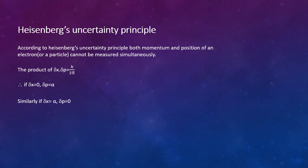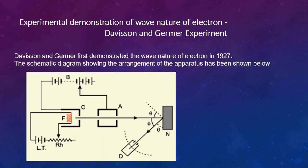Next, we will see Heisenberg's uncertainty principle. According to Heisenberg's uncertainty principle, both momentum and position of an electron or a particle cannot be measured simultaneously. There will be some uncertainty in position Δx and uncertainty in momentum Δp. The product Δx × Δp is approximately equal to ℏ, that is h/2π. According to this equation, the right-hand side is a constant. So if Δx = 0, Δp will be infinity. Similarly, if Δx is infinity, Δp = 0. That means we cannot simultaneously measure the position and momentum of an electron.